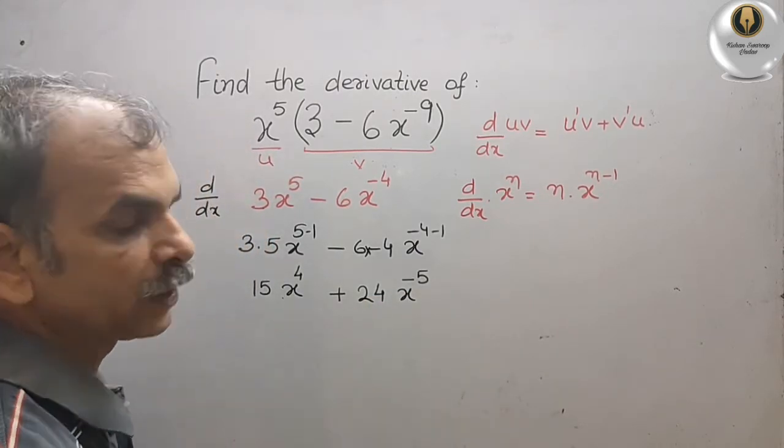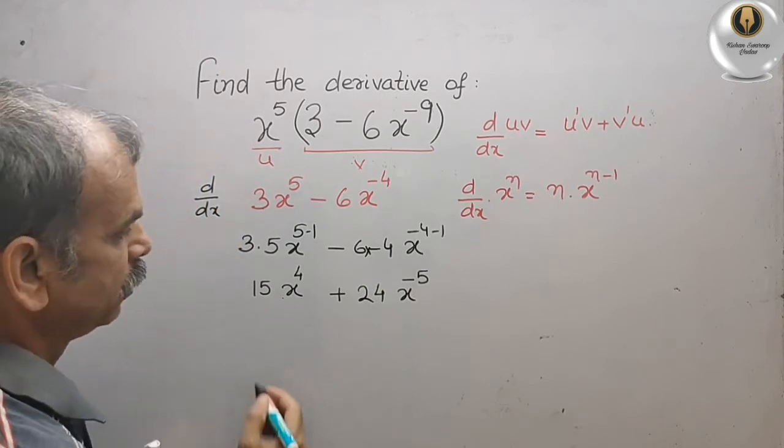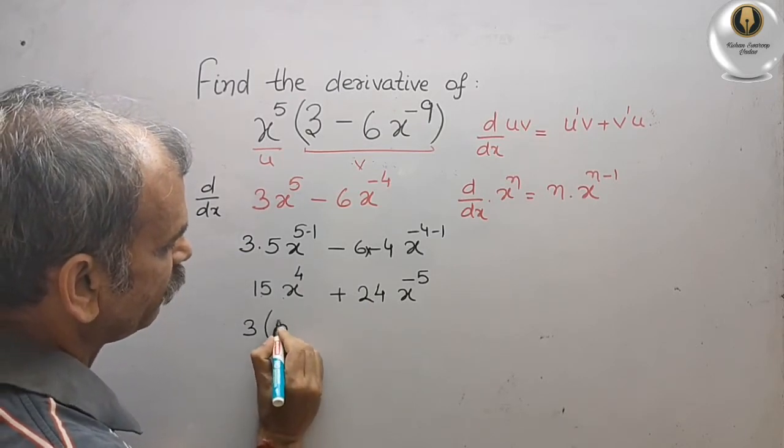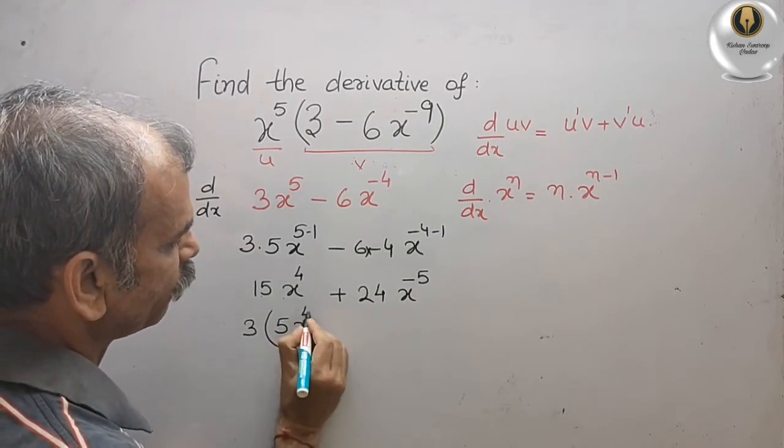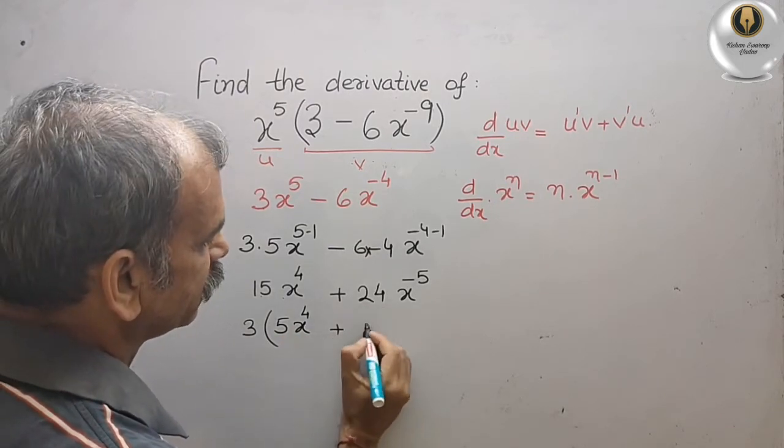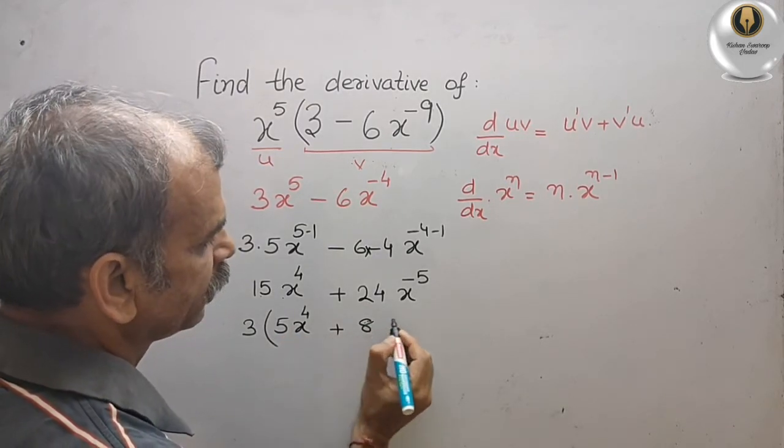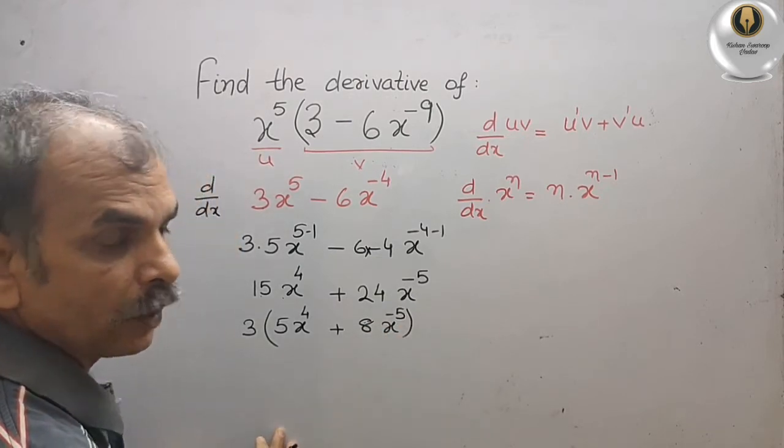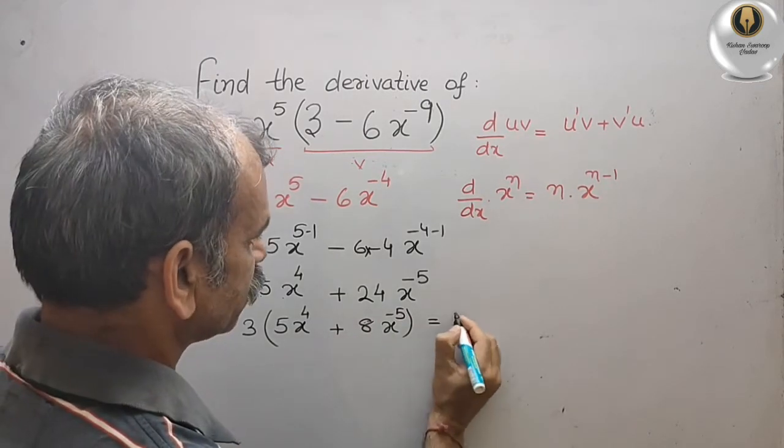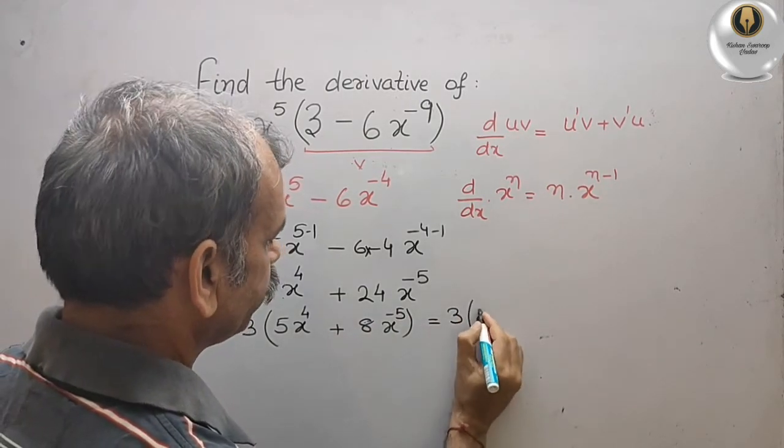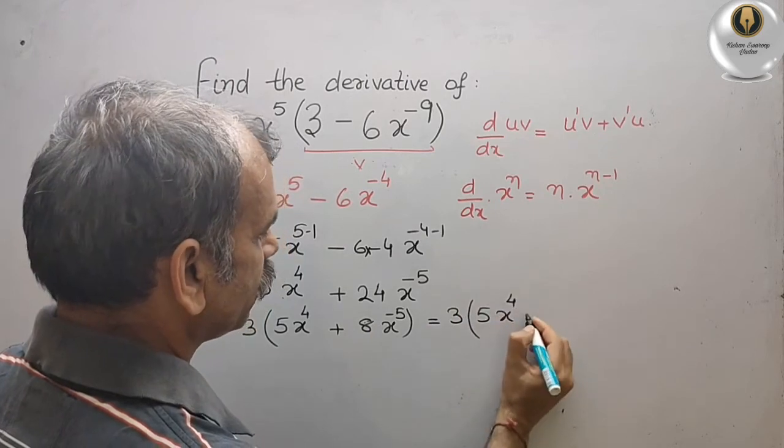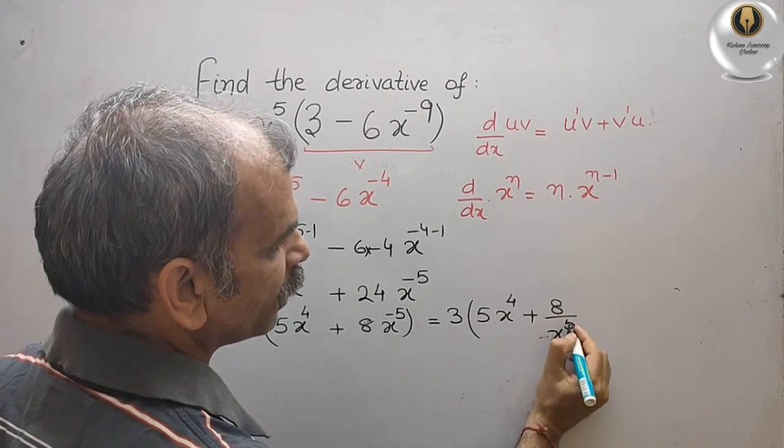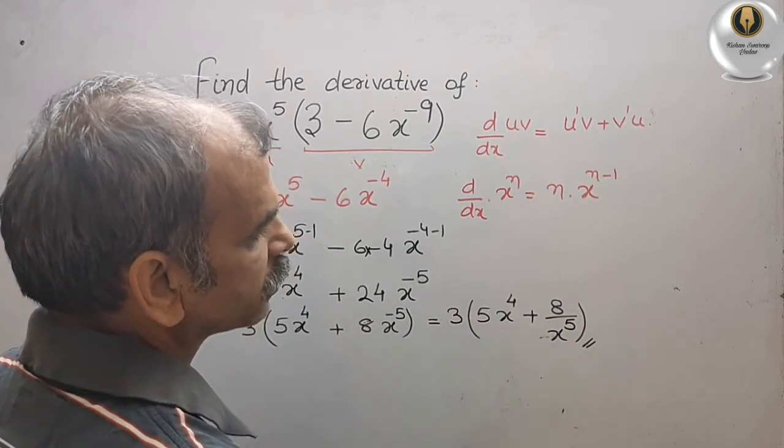If you solve this, you can see here 3 is common. So we will get 3, 5x to the power of 4 plus this is your 8, x to the power of minus 5. We can write this as 3 into 5x to the power of 4 plus 8 by x to the power of 5. So this is your answer.